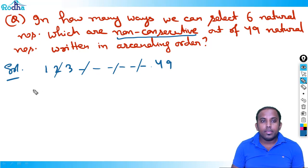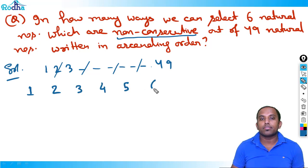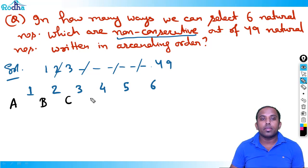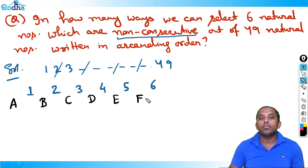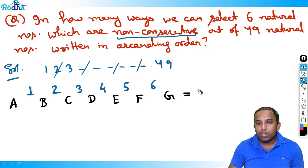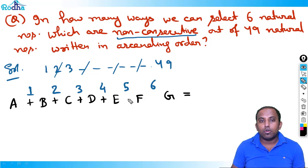So if I pick my six numbers — first, second, third, fourth, fifth, sixth — the number of numbers before the first is A, between first and second is B, between second and third is C, between third and fourth is D, between fourth and fifth is E, between fifth and sixth is F, and after sixth is G.